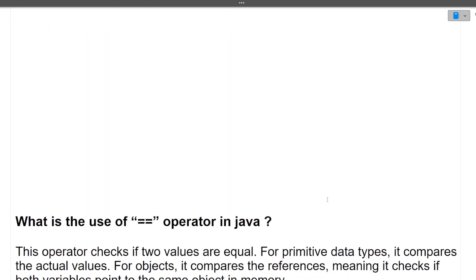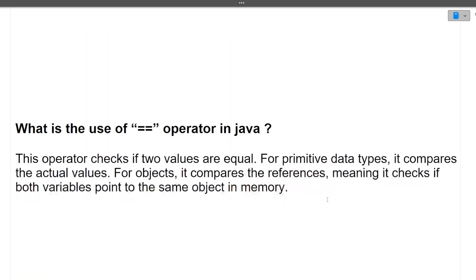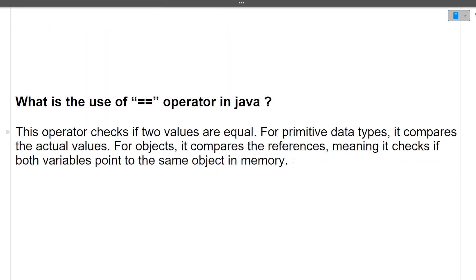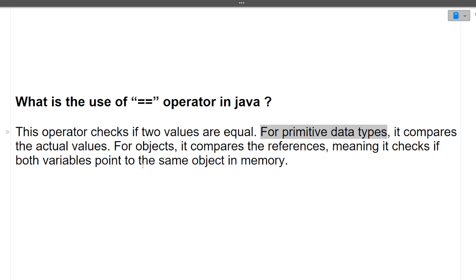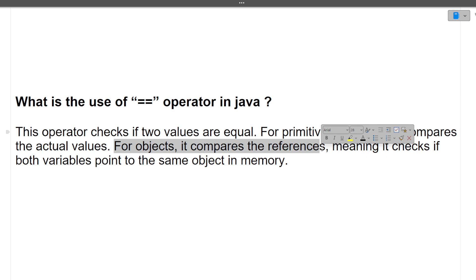The next question was: what is the use of the double equals (==) operator in Java? For primitive data types like integer, it compares the actual values. For objects, it compares the references — meaning the memory address. So if you do a1 == a2 for objects, it will compare the references of those objects, not their content.